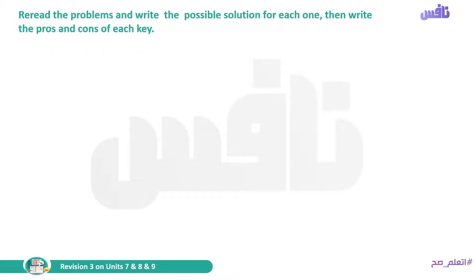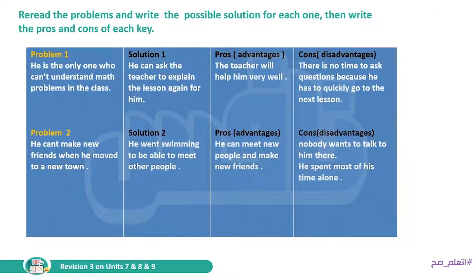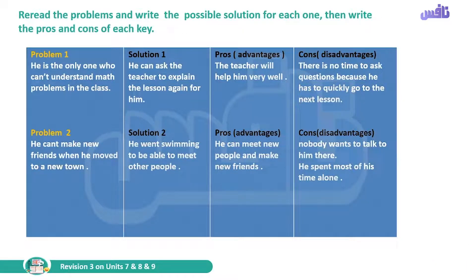Now we read the problems and write the possible solution for each one, then write the pros and cons of each. The first problem is that he is the only one who can't understand math problems in the class. The solution is that he can ask the teacher to explain the lesson again for him. The pros — meaning advantages — are that the teacher will help him very well. The cons — meaning disadvantages — are that there is no time to ask questions because he has to quickly go to the next lesson.